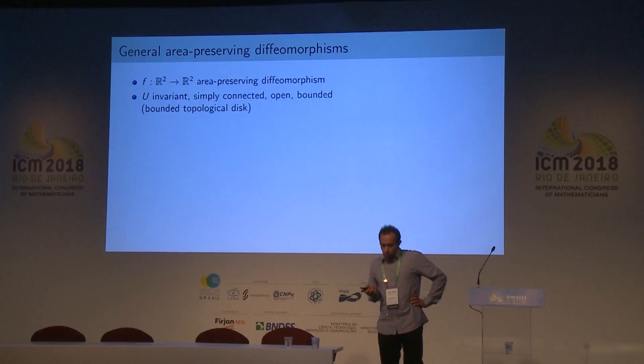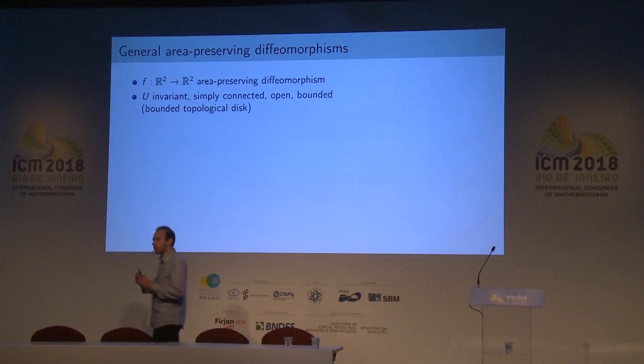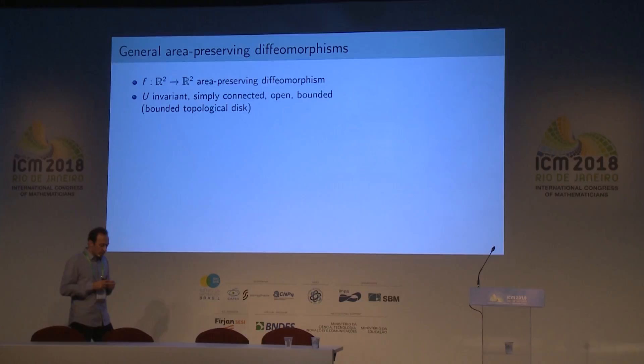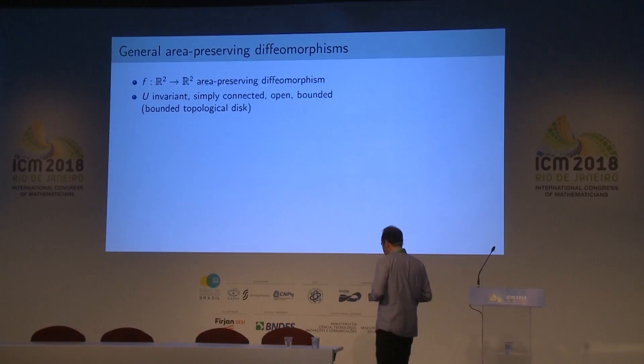We have seen several consequences arising from a simple theorem about the boundary dynamics of a surface diffeomorphism. It's interesting to consider the problem more precisely and ask what happens if there are periodic points on the boundary of some domain. Forget the generic condition — consider any area-preserving diffeomorphism. For simplicity, consider R² and a simply connected open set. What happens if this open set has a periodic point on the boundary?